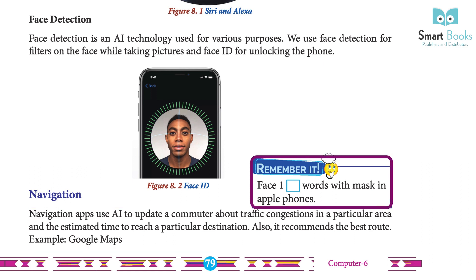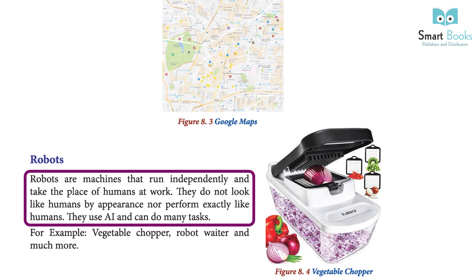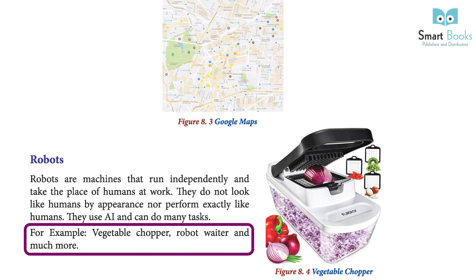Remember it! Face ID works with a mask in Apple phones. 8. Robots: Robots are machines that run independently and take the place of humans at work. They do not look like humans by appearance, nor perform exactly like humans. They use AI and can do many tasks. For example, vegetable choppers, robot waiters, and much more.